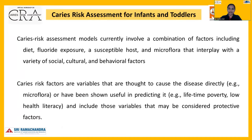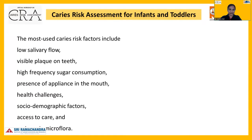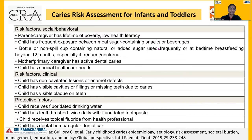Caries risk assessment models involve a combination of factors like diet, fluoride exposure, susceptible host, and microflora, which interplay with a variety of social, cultural, and behavioral factors. The most common caries risk factors include low salivary flow, visible plaque, high frequency sugar consumption, presence of an appliance, health challenges, sociodemographic factors, and cariogenic microflora. The balance between these risk factors and protective factors determines whether a child belongs to a high or low risk category.